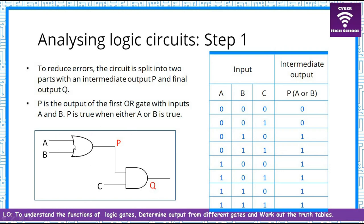We start by analyzing the first gate, which is an OR gate (identified by its shape). It is fed by inputs A and B, giving output P, so we calculate A OR B. When A=0 and B=0, P=0. When A=0, B=1, P=1. When A=1, B=0, P=1. When A=1, B=1, P=1. We do not consider C yet — we only look at A and B to get P.